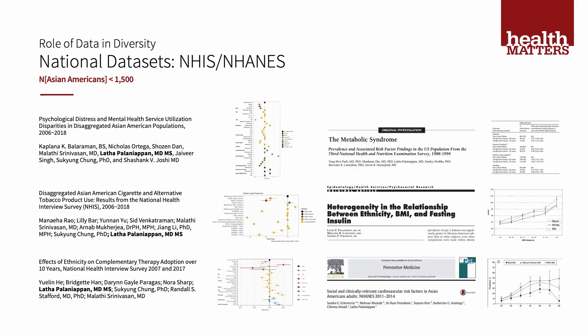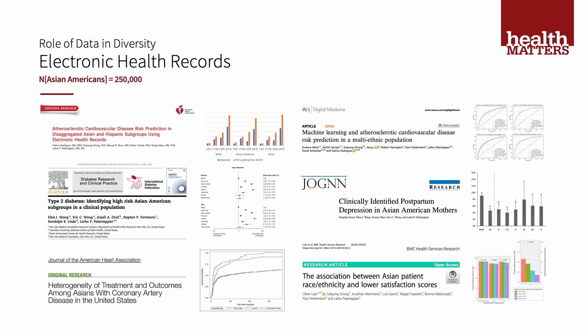At Stanford, we've studied national datasets with regard to Asian health, including the National Health and Nutrition Examination Survey and the National Health Interview Survey, covering mental health, cigarette smoking, complementary alternative therapy, prediabetes, and diabetes. We've also studied Asian subgroups using de-identified electronic health records at Stanford, examining cardiovascular disease, type 2 diabetes, outcomes after stents, machine learning, postpartum depression, and patient satisfaction scores.